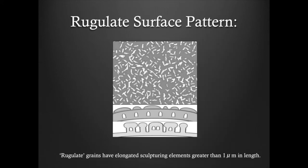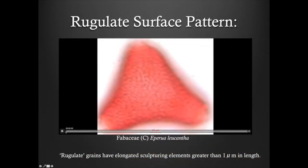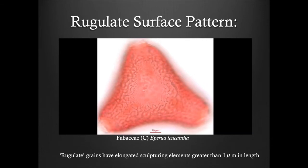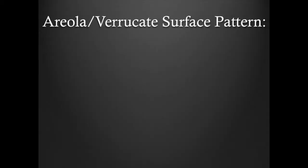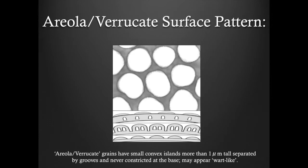Verrucate grains have elongated sculpturing elements that are greater than one micrometer in height, separated by grooves, and they are never constricted at the base. They may even appear wart-like.